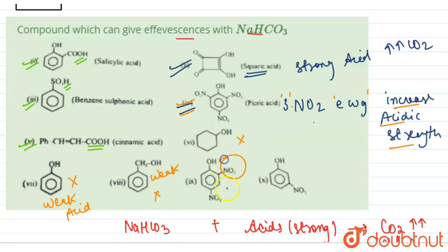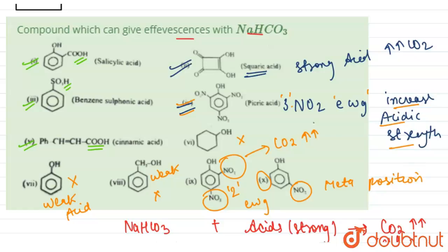Here we have 2NO₂ groups, two electron withdrawing groups. So it will also give CO₂ gas, that is meant effervescence here. Lastly, it has NO₂ group at meta position, and at meta position NO₂ is ineffective in increasing the basic strength.